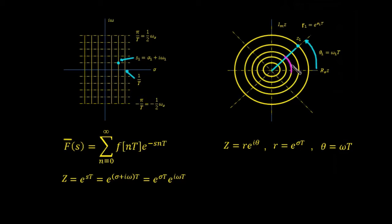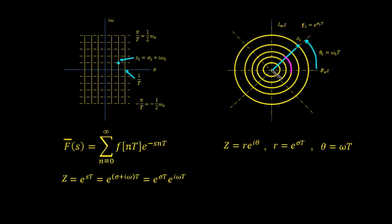Everything on the outside of that unit circle corresponds to values of sigma greater than 0. Equally spaced lines of constant sigma — the vertical lines — are mapped to exponentially spaced circles in the Z-plane. These concentric circles are not linearly spaced; they are exponentially spaced. The further out you go, the more widely spaced the circles are, and the closer you come to the center, the more tightly spaced they are.